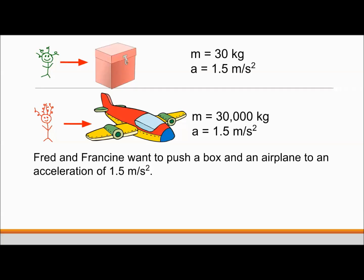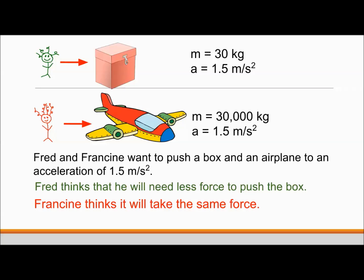Fred and Francine are having a disagreement. Fred has a box of mass 30 kilograms, and Francine has an airplane of mass 30,000 kilograms. Both want to move their objects with an acceleration of 1.5 meters per second squared. Fred thinks he will need less force to push the box. Francine thinks it will take the same force. Who is right?